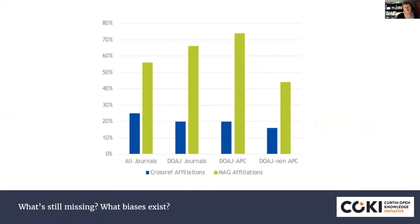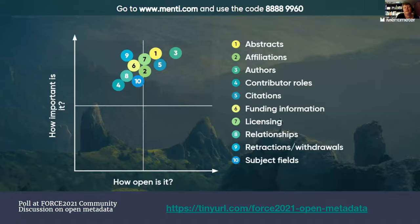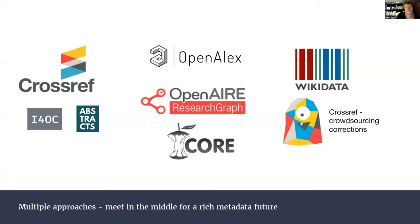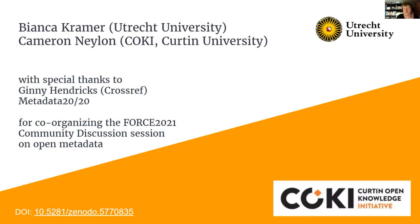You can see where current coverage of metadata is strong and also where gaps still exist — for instance, looking at coverage of affiliations, and drilling down to different types of journals, different languages, different countries to see where coverage is better. In a community discussion this morning, we collectively looked at which types of metadata are important and more or less open. We zoomed in on retractions and withdrawals as a currently often-missing part of metadata, and there was interest in developing open subject classification metadata. In general, the plea is for multiple approaches that are not mutually exclusive — they can complement each other, meeting in the middle for a rich metadata future. Contact details are in the chat. Thank you very much and thank you FORCE11 for the opportunity to present.